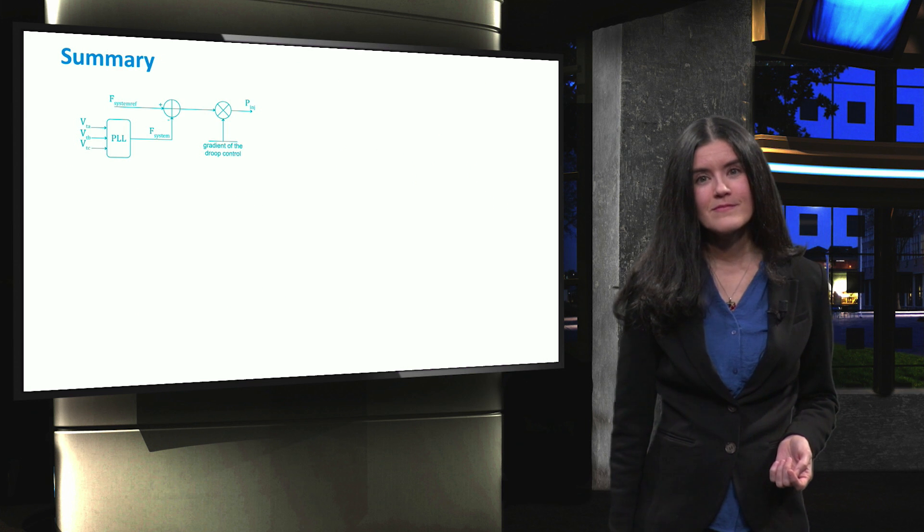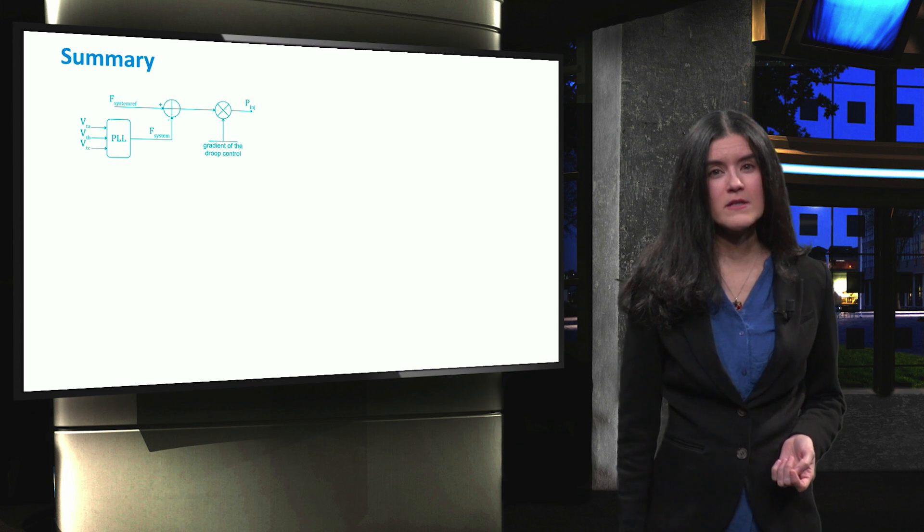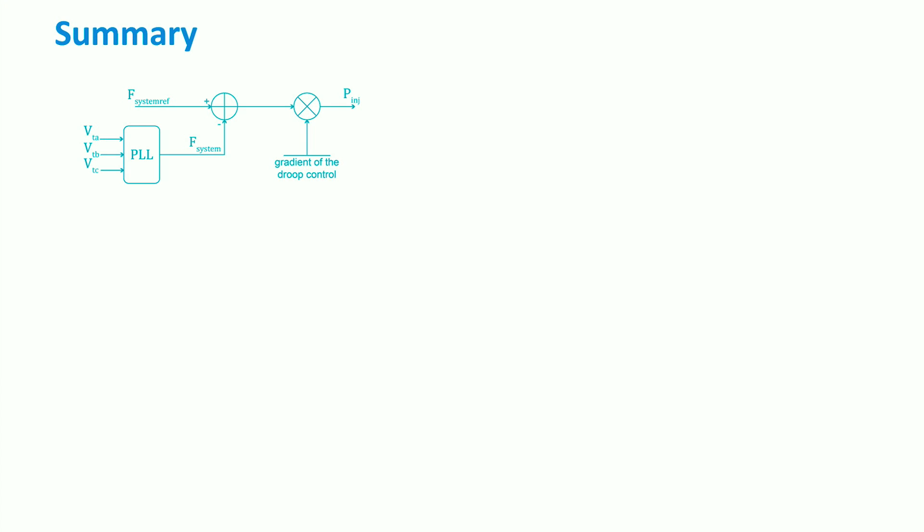Let's now wrap up and see what we have covered in this video. First, we saw that frequency droop control can be implemented in voltage source converters using a phase locked loop to compare the reference frequency to the measured value. This results in an error signal that is multiplied by the droop gradient to find the active power to be injected.